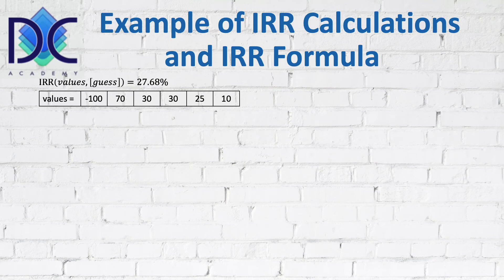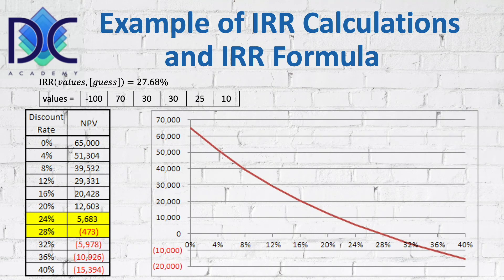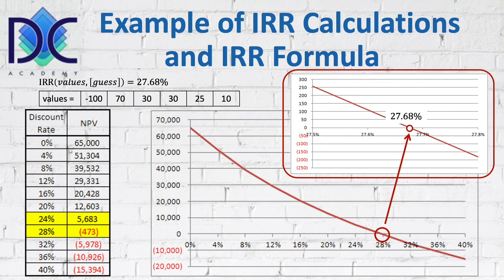Two decimals is typically considered okay. Now, what can we do with these numbers? We can create a curve using different discount rates and calculate the net present value. Starting from zero percent and going to a higher percentage, we can select the interval as we want. We see on this curve how the net present value evolves as the interest rate increases, and we also see an intersection which, when we do the calculation, corresponds to 27.68 percent.